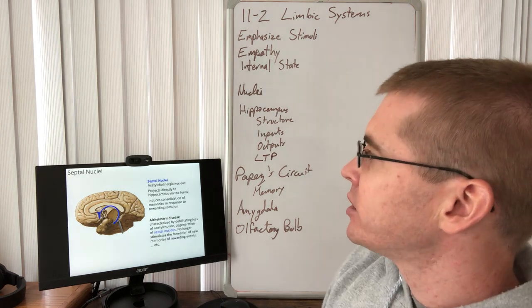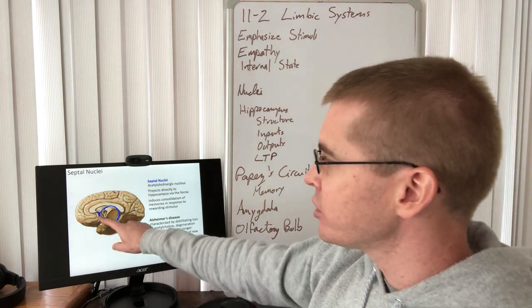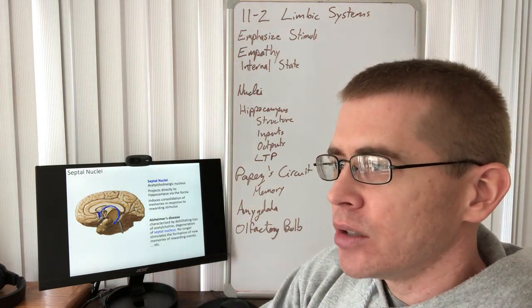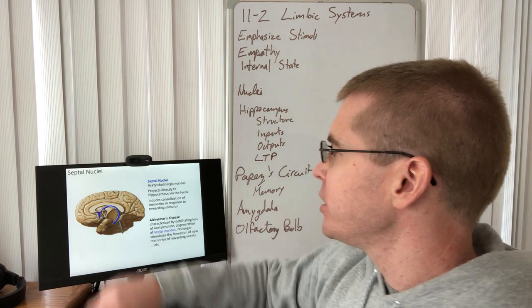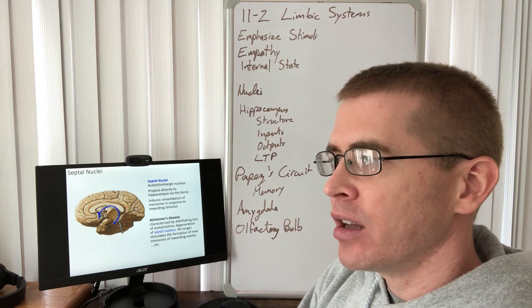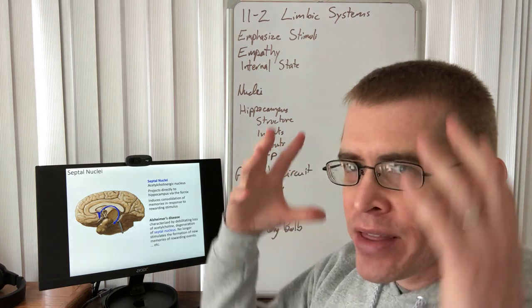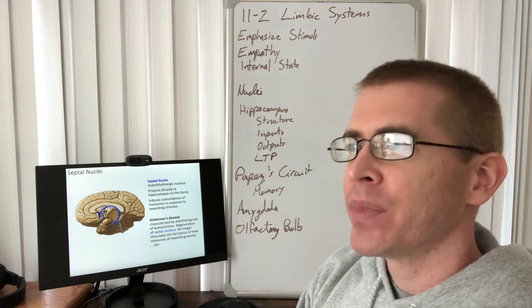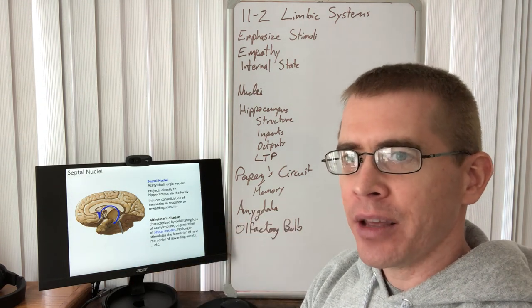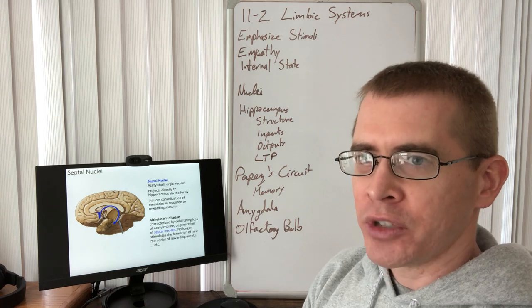Okay. The septal nucleus, we've talked about that. It contains acetylcholinergic neurons as well, projects to the hippocampus through the fornix. So again, formation of memory. This nucleus is critical for triggering the consolidation of memories based on the activity of the brain at a given moment. So that activity of the brain, that web, that network of neurons that's firing is strengthened through the input of these acetylcholinergic neurons and the hippocampus that are saying, the neurons that are firing together right now, we should wire them together more strongly.